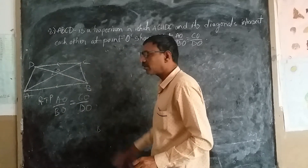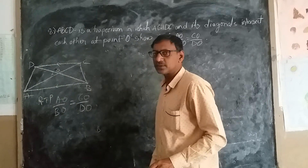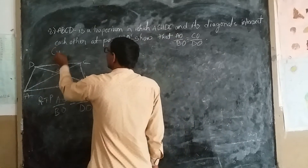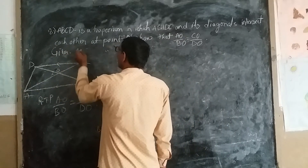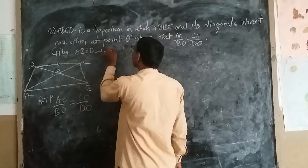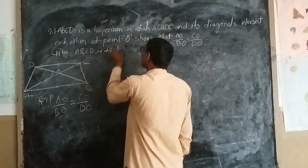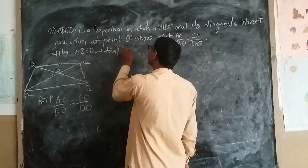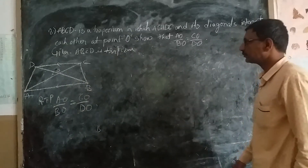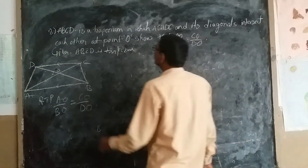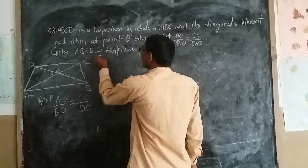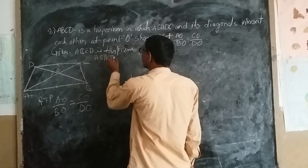So given: ABCD is a trapezium, where AB is parallel to CD. This is the given information. To prove: AO/BO = CO/DO.